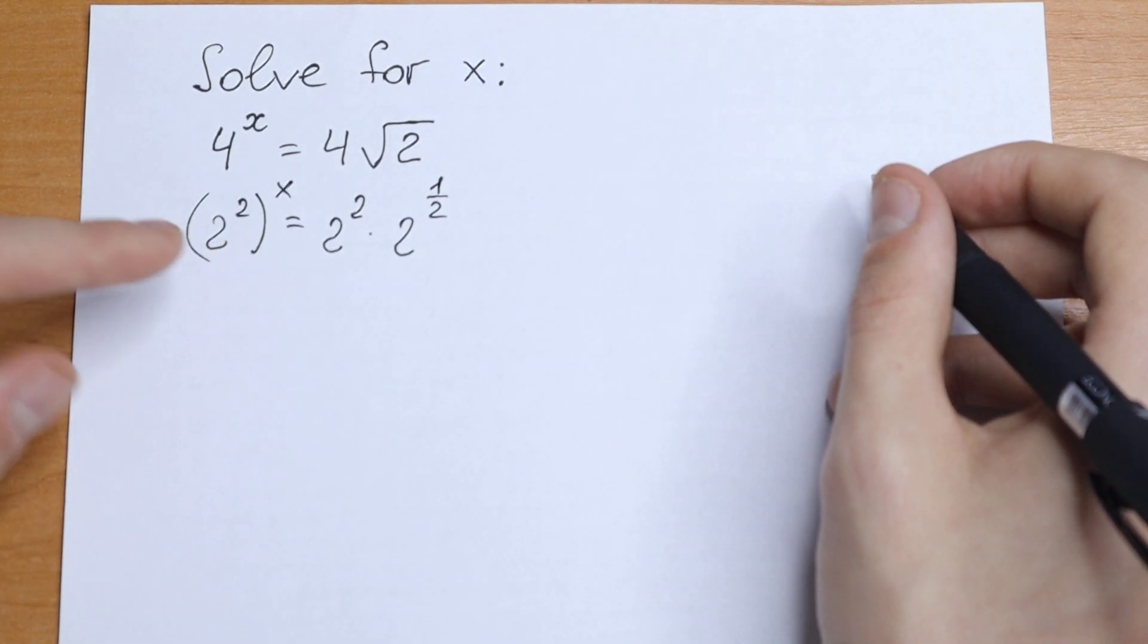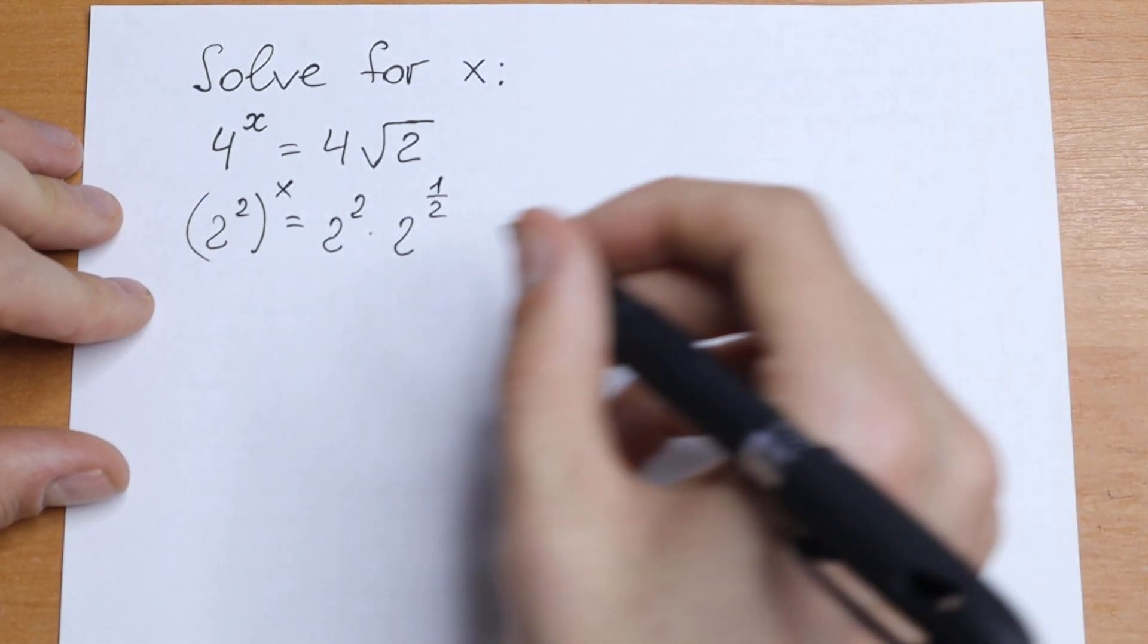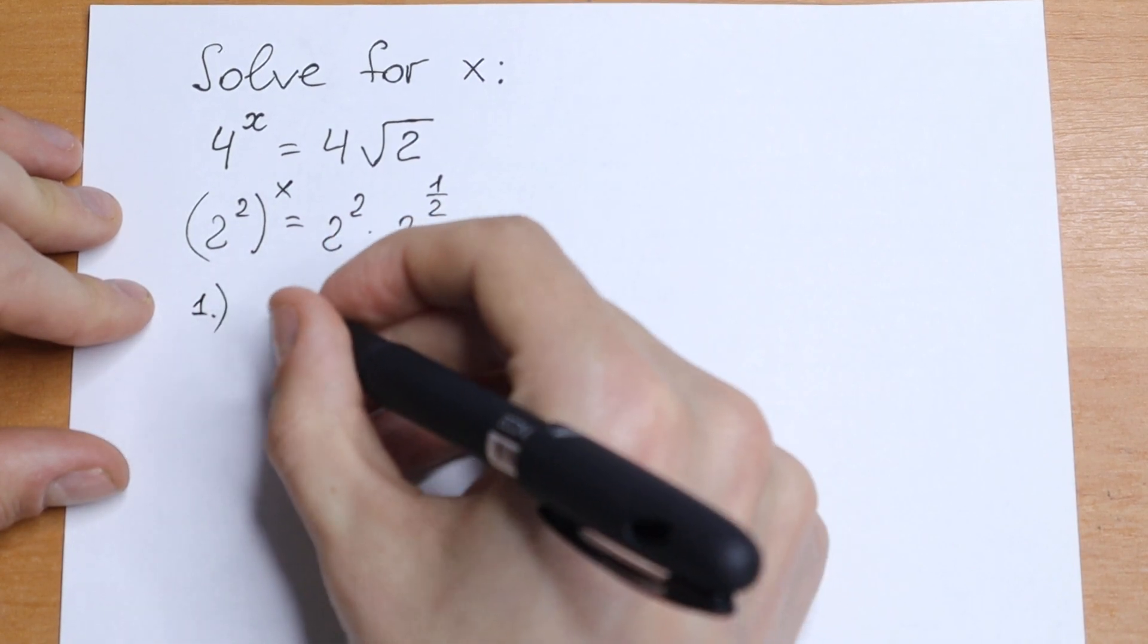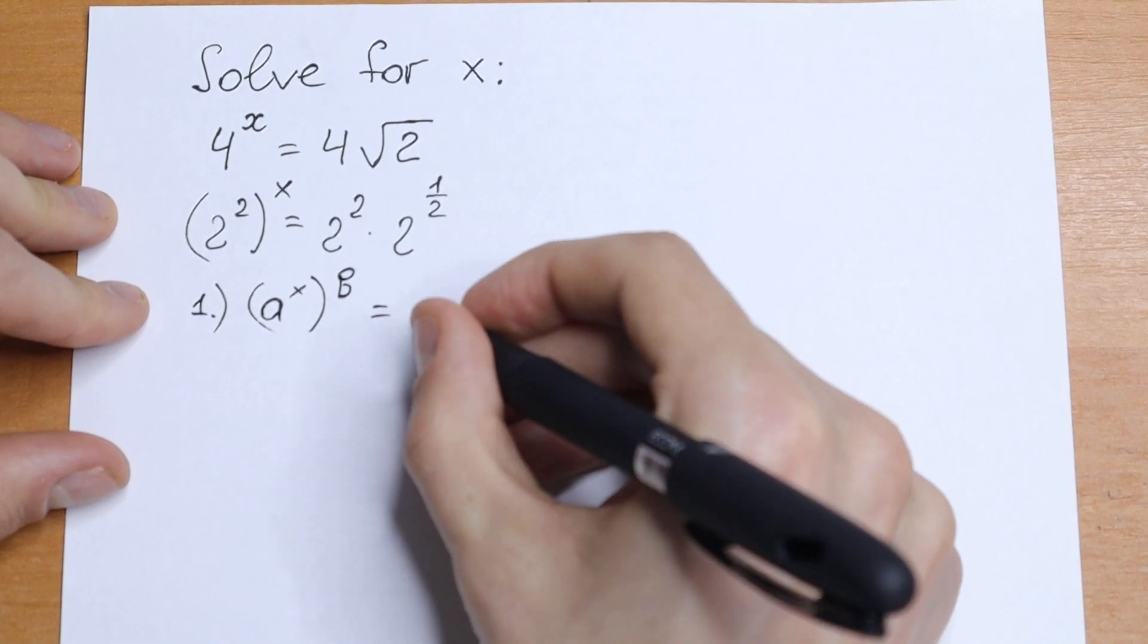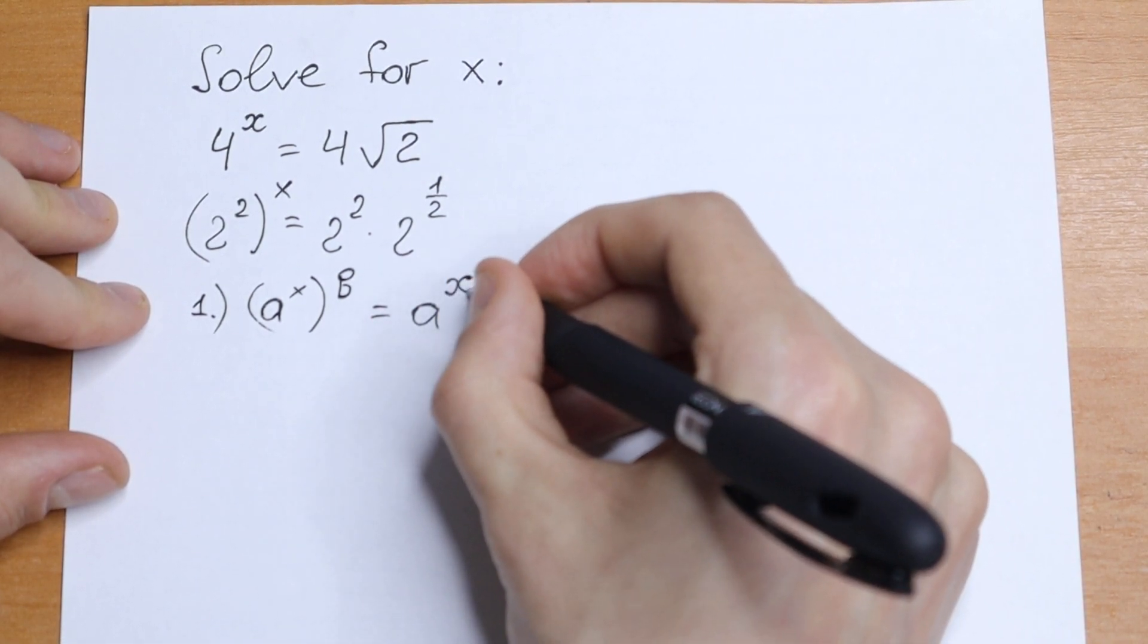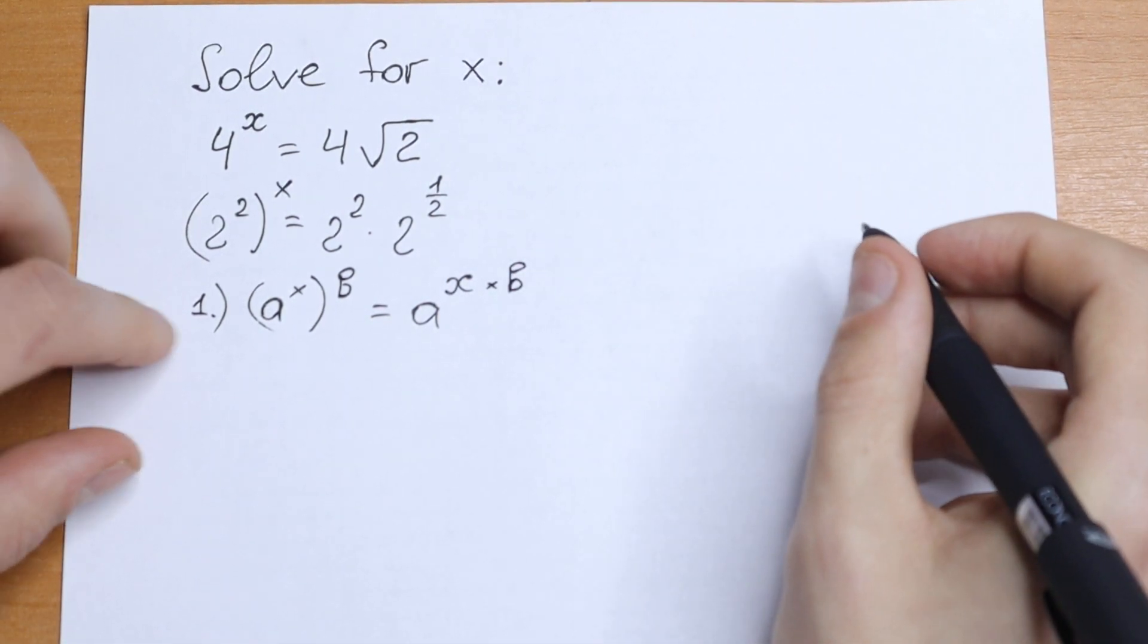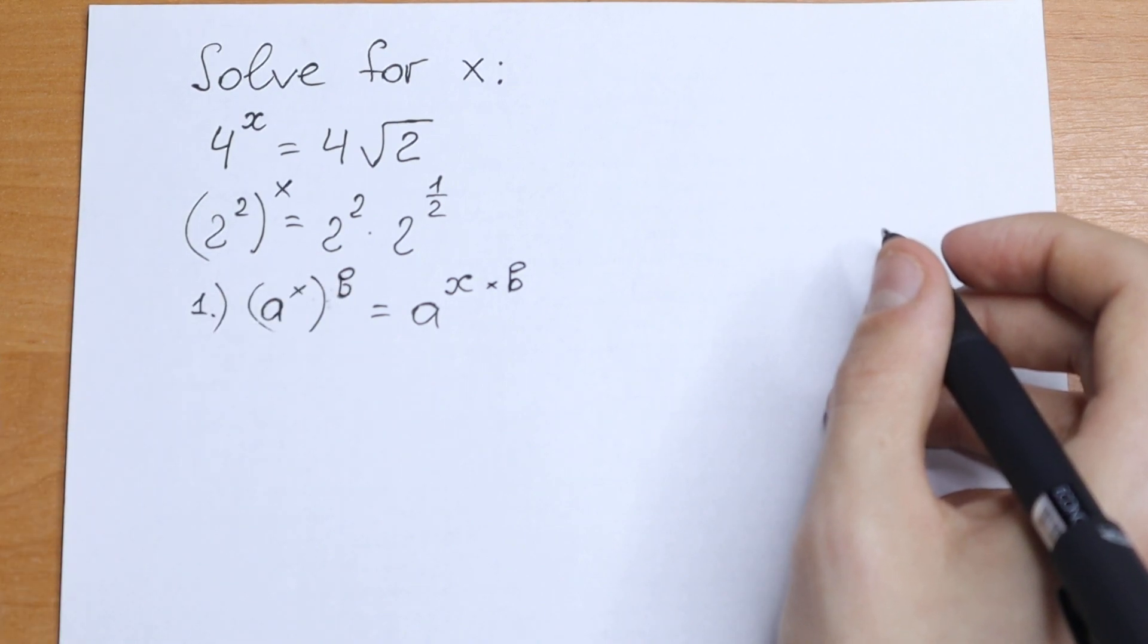Okay, what we're going to do next? We need to know two rules. The first rule: if we have a to the power x raised to the power b, we can write it as a to the power x times b. So we need to multiply these powers.